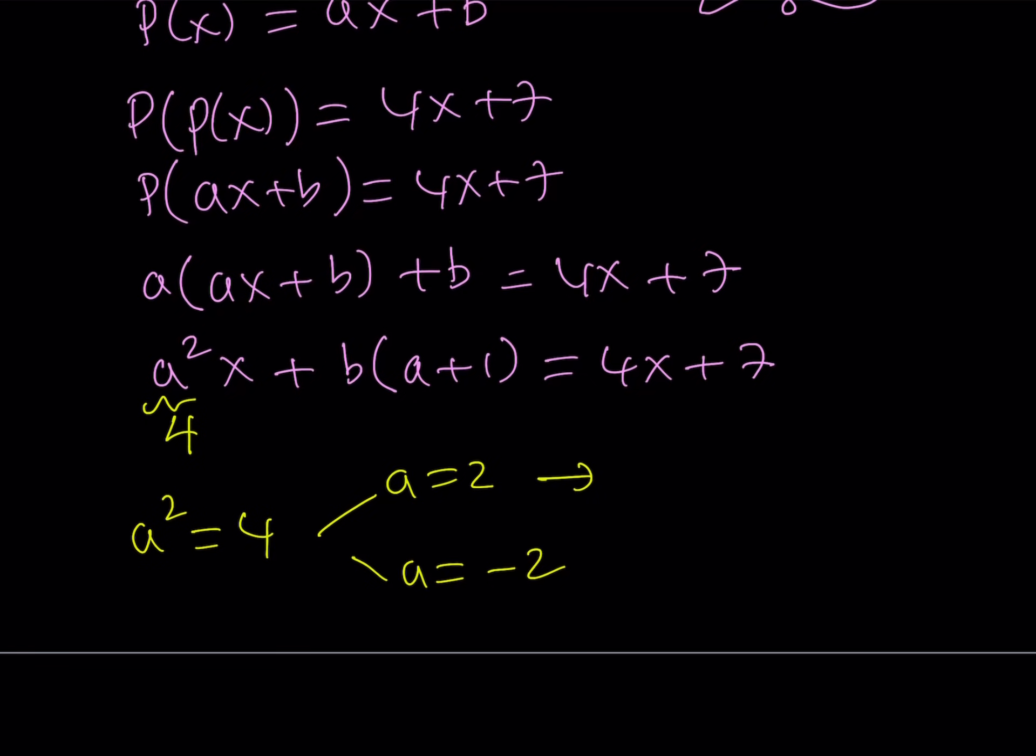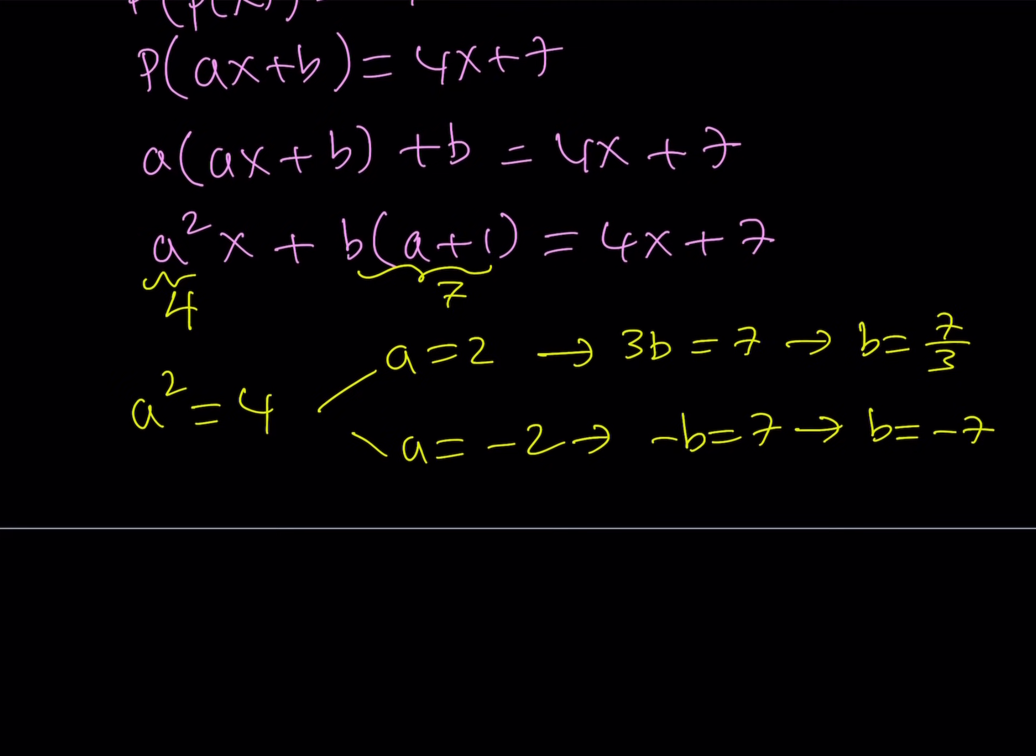Obviously there's no reason why we would pick one over the other, so we're going to consider both. If A equals 2, I can substitute that here. Well, this is supposed to equal 7. If A is 2, I'm getting something like 3B equals 7, which implies B equals 7 thirds. From the second one I get a nicer expression. If A equals negative 2, negative 2 plus 1 is negative 1, so I get negative B equals 7, which implies B equals negative 7. This gives us two options, two cases.